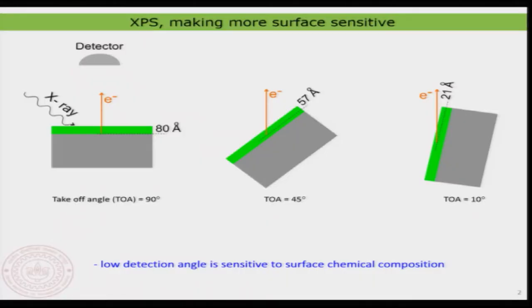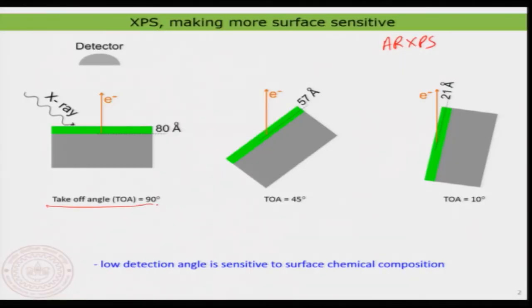In the last lecture, we were talking about making XPS more surface sensitive. This particular technique, known as angle-resolved x-ray photoelectron spectroscopy, is a technique you can apply to make XPS more surface sensitive. We always have the detector and then tilt the sample with respect to the detector. We call this the takeoff angle. I demonstrated an example of silicon dioxide on silicon. With a takeoff angle of about 10 degrees, you are getting information from just about 21 angstroms — about 2 nanometers.